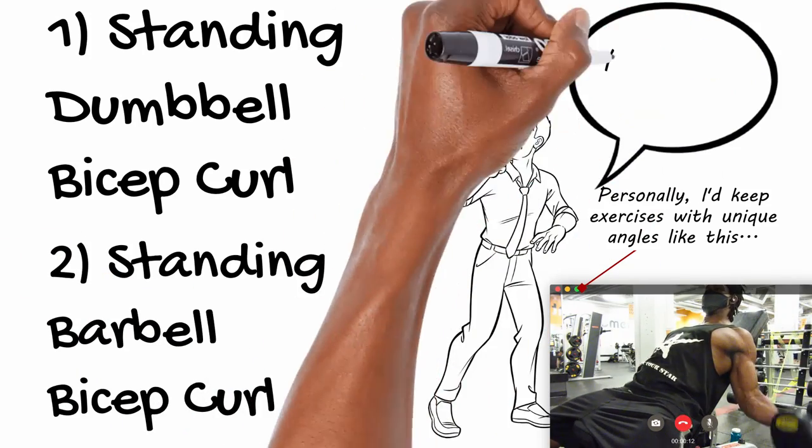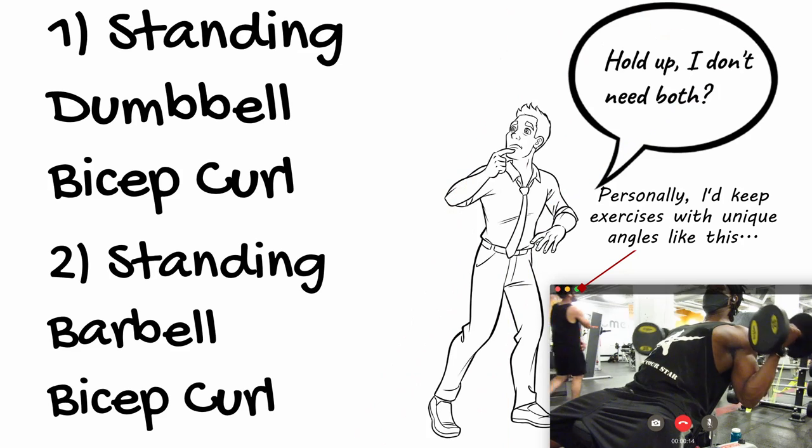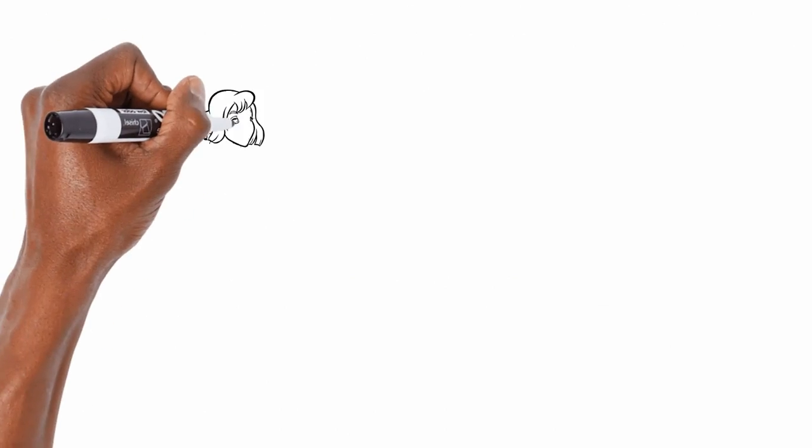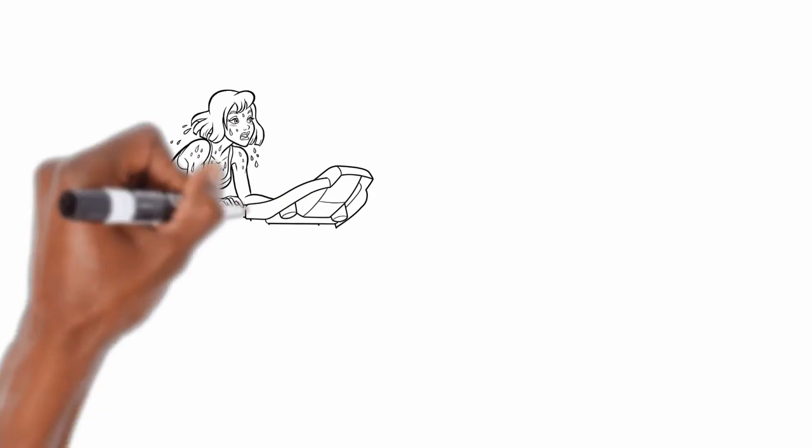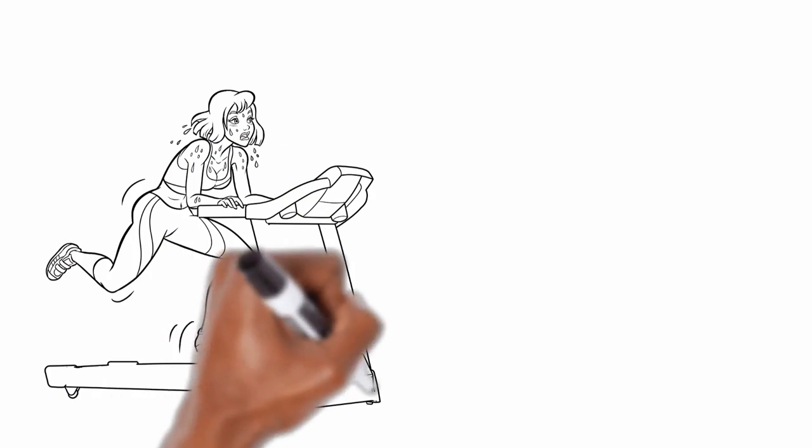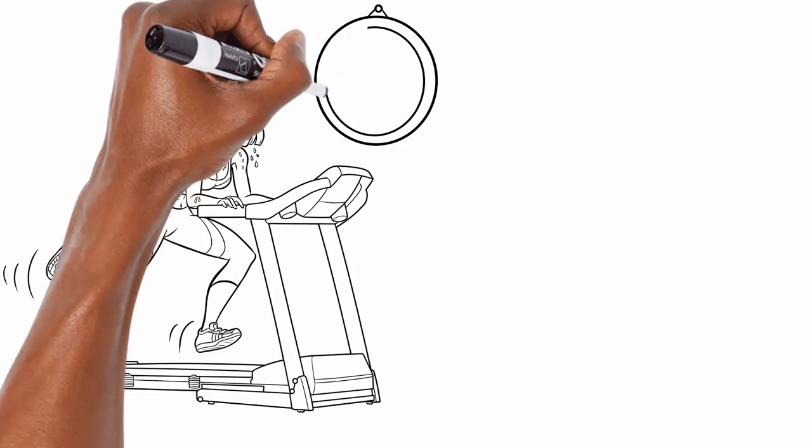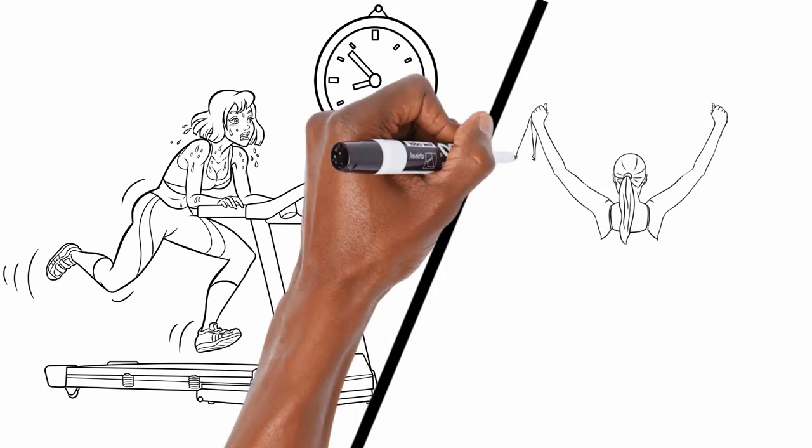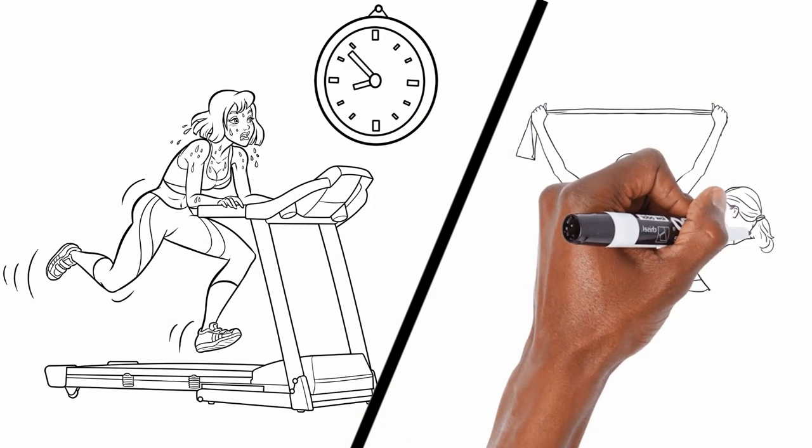This could be things like removing one of the two from standing barbell bicep curl and standing dumbbell bicep curl if you wrote down both. Next, find the exercises you find hardest from each muscle group and keep those. Usually the reason you find them hard is because you're weak when it comes to those particular movement patterns and strengthening them will likely benefit you the most.